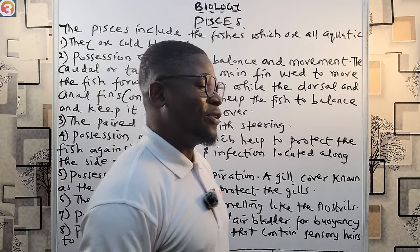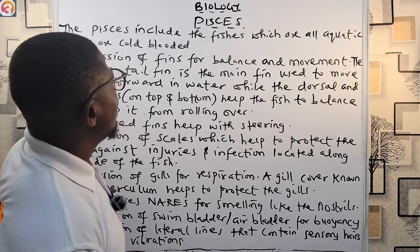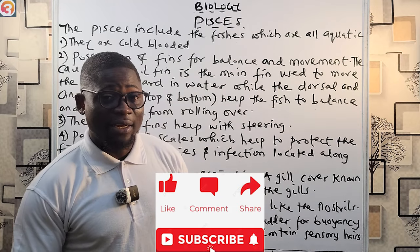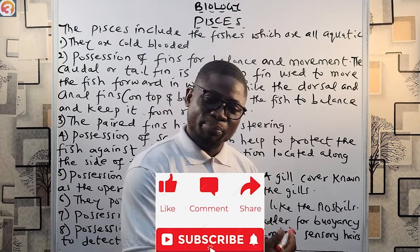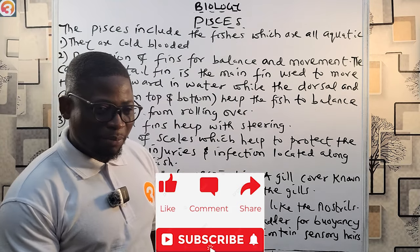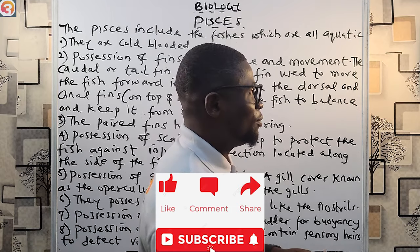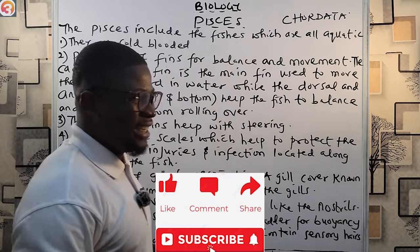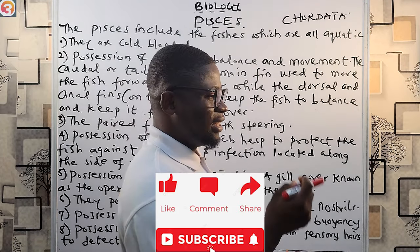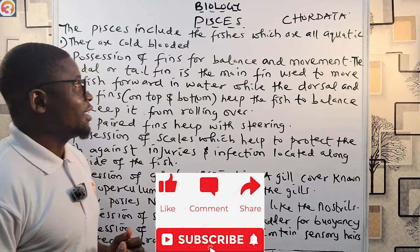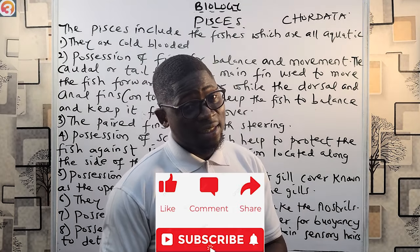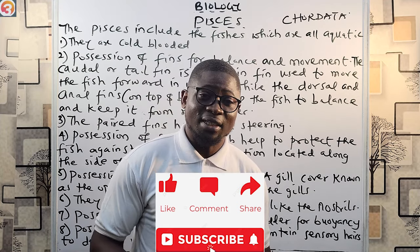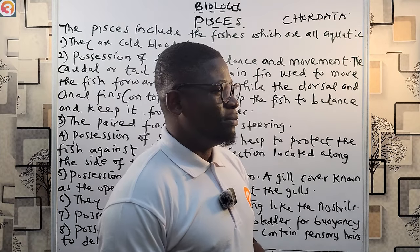Hello guys and welcome back to another episode of biology. Today we are looking into the phylum Chordata. Vertebrates are a sub-phylum of the phylum Chordata. They are divided into five classes: fishes, birds, reptiles, amphibians, and mammals.